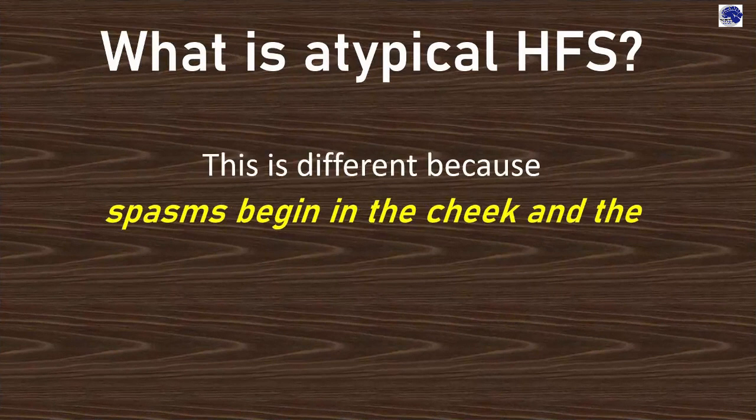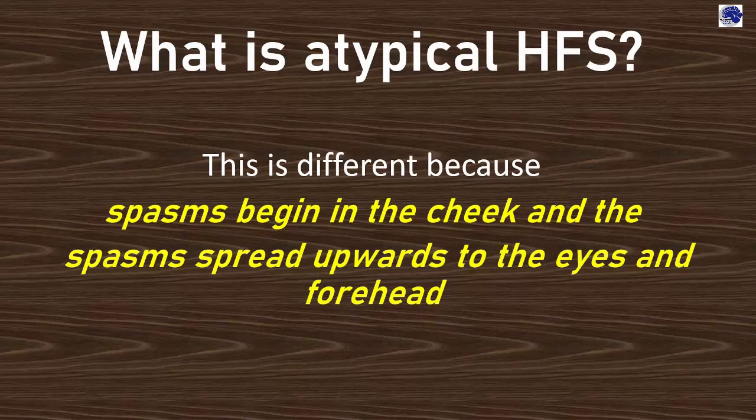What is atypical hemifacial spasm? This is different because spasms begin in the cheek and the spasms spread upwards to the eyes and forehead.